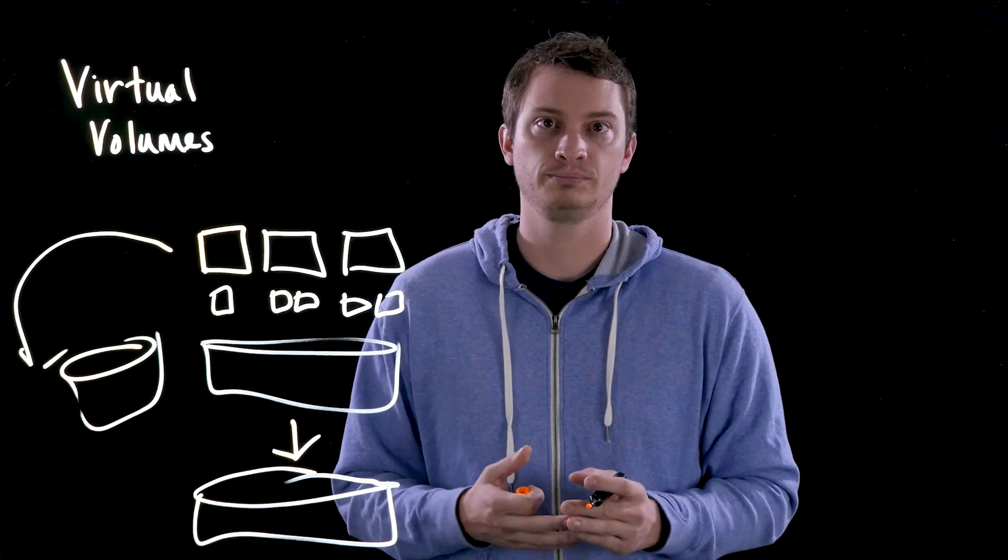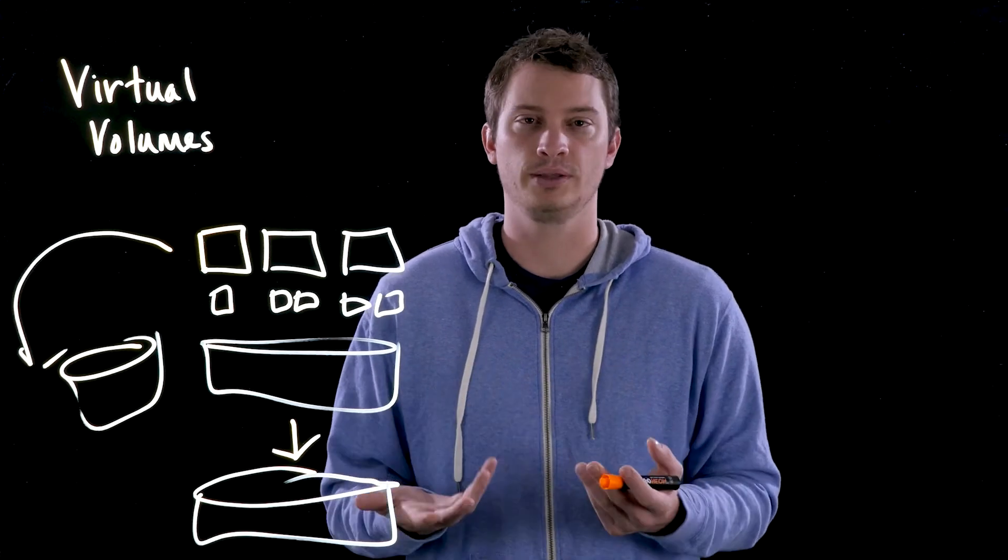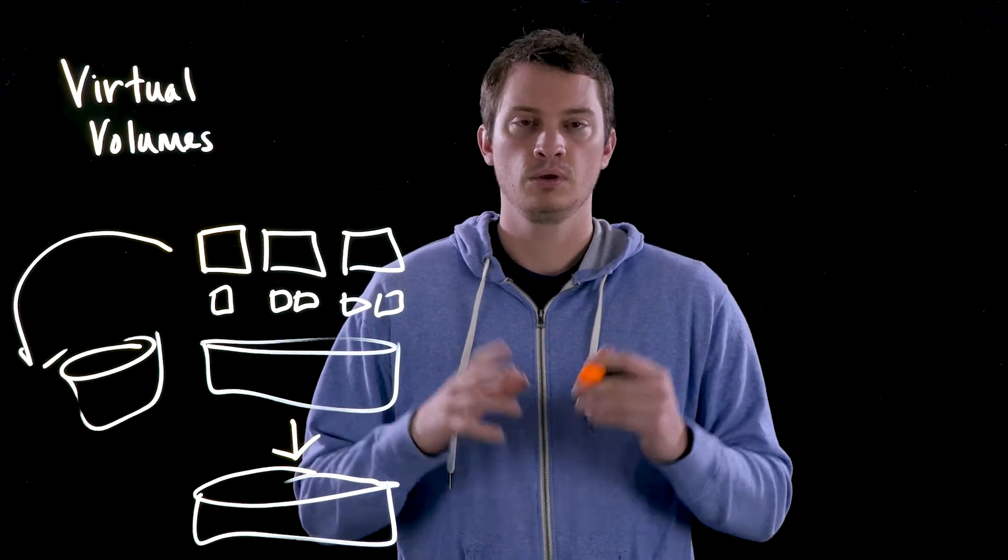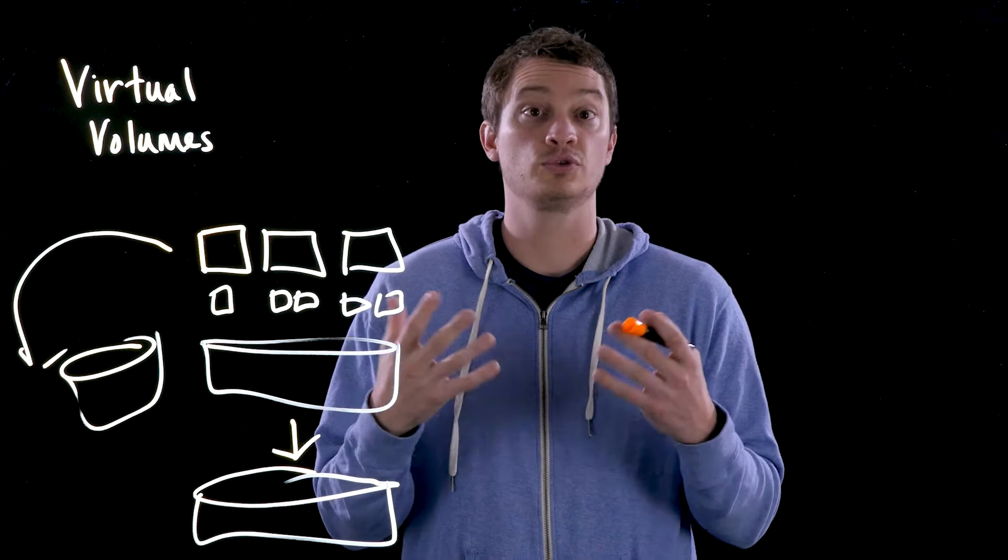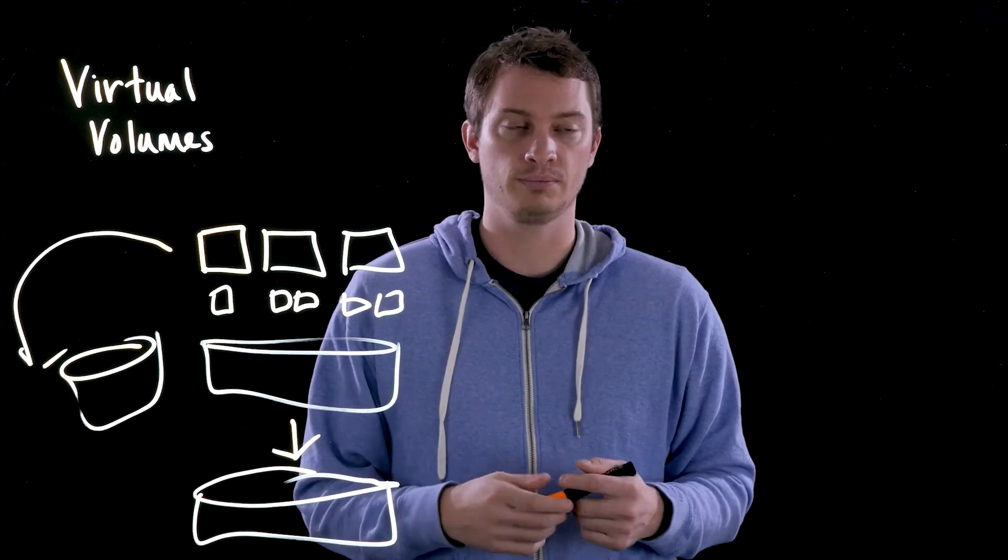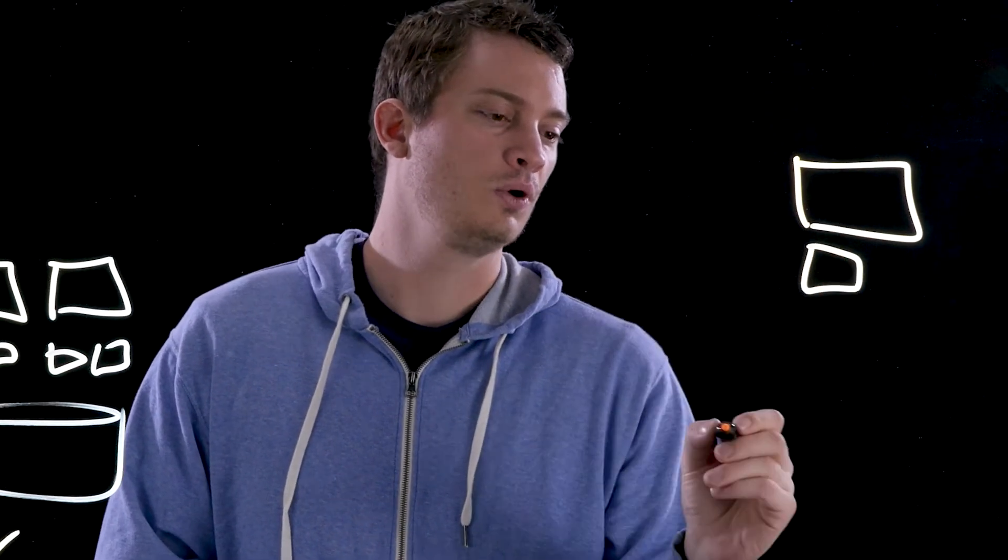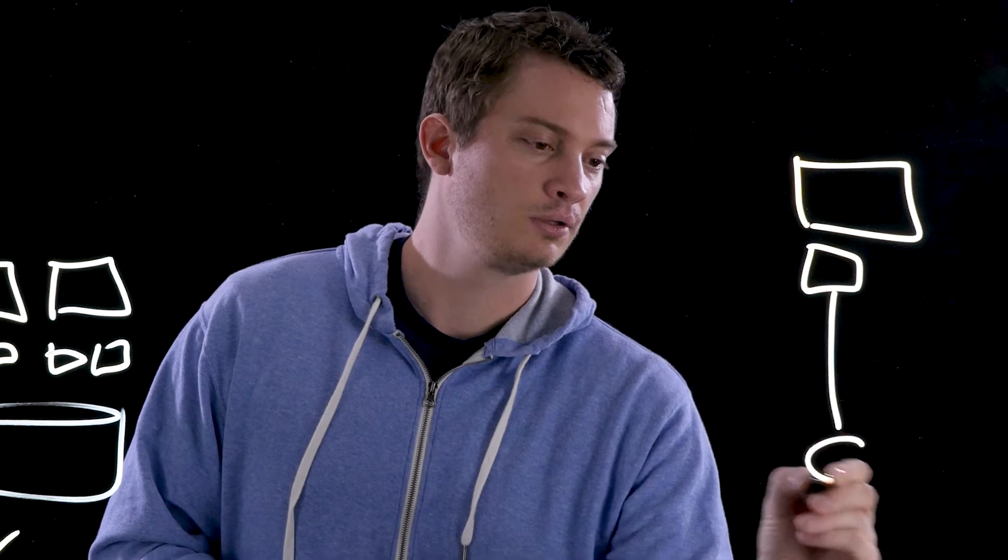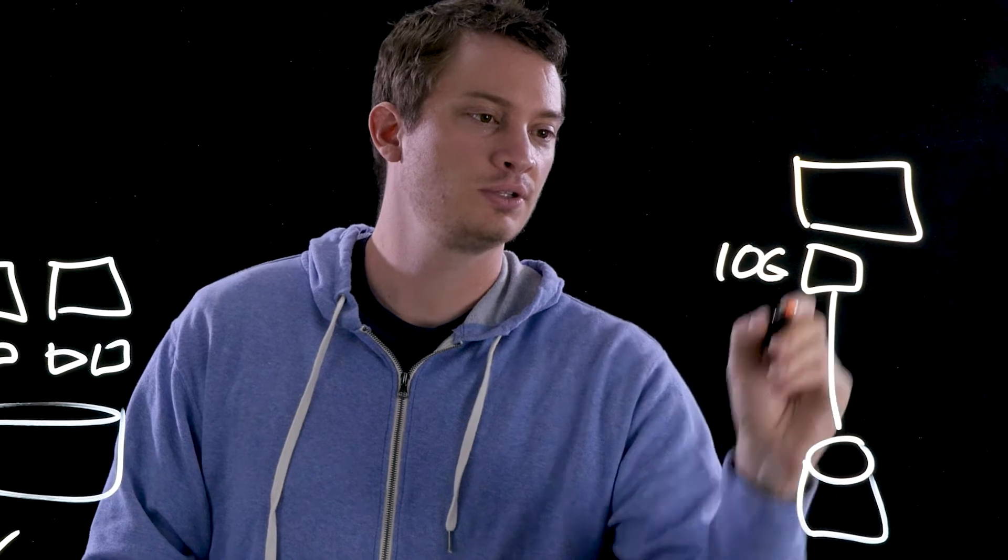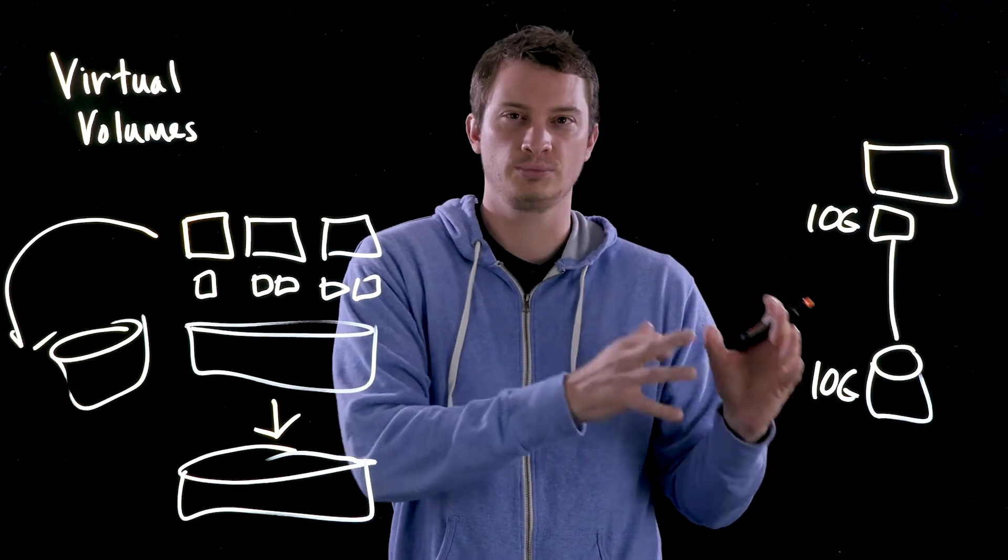So let's talk about how it solves it. How do virtual volumes solve for these two problems, granularity and compliancy? Well, a couple ways. First off, every virtual disk you now add to a virtual machine, if it's vVol based, is actually a physical volume on the array. So if I have a VM and I create a new virtual disk, what actually happens is a volume is created on the array. If this is 10 gigs, 10 gigs.